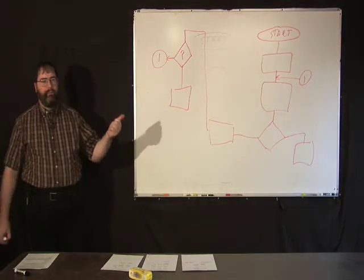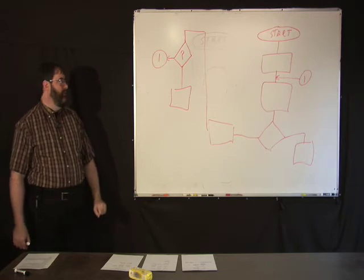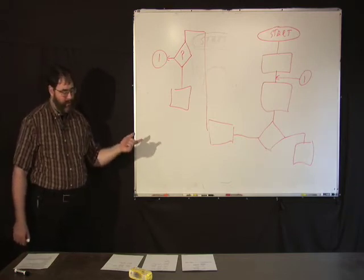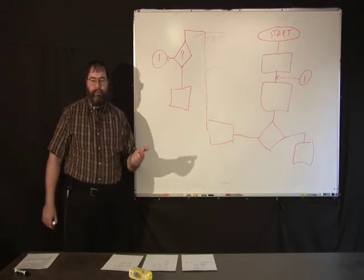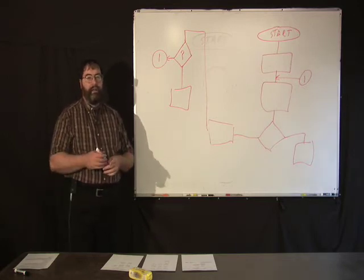There can only be one input into the process for each label. Otherwise, you don't know what it is. Those are the basic flowchart symbols that could actually define any process.